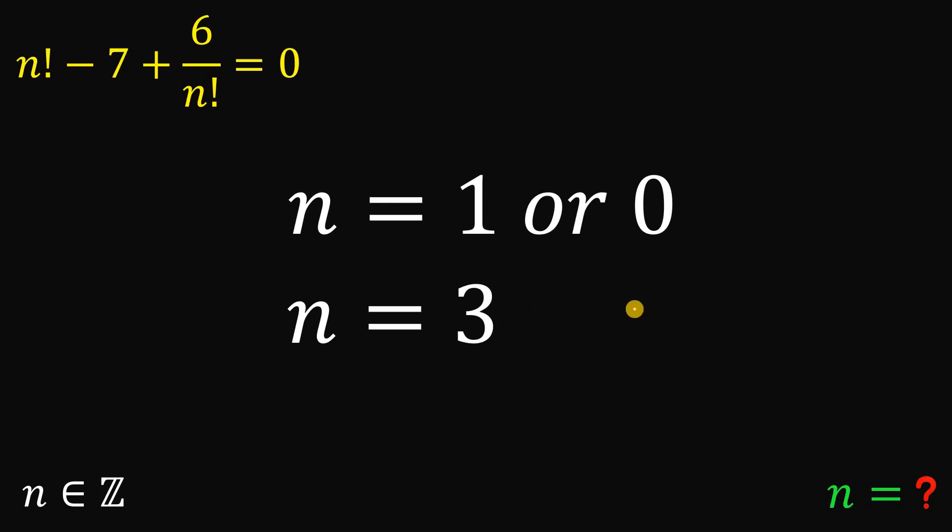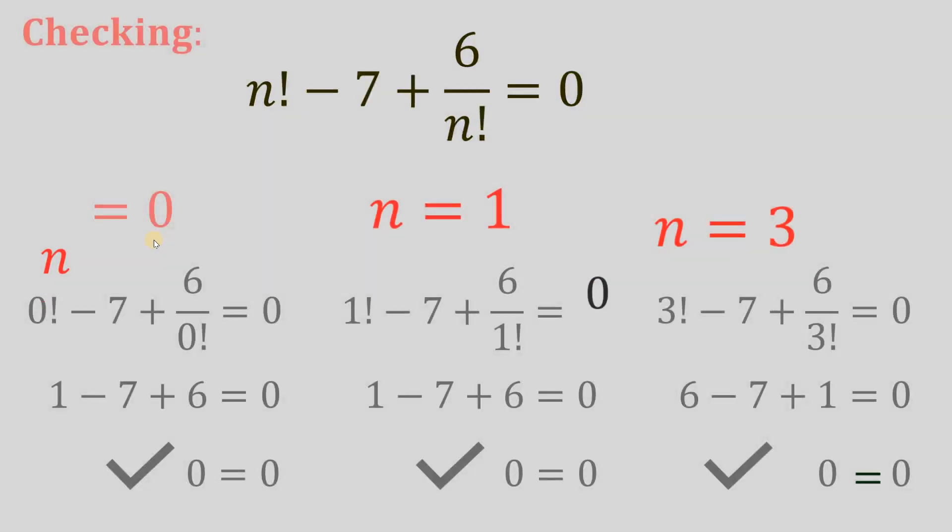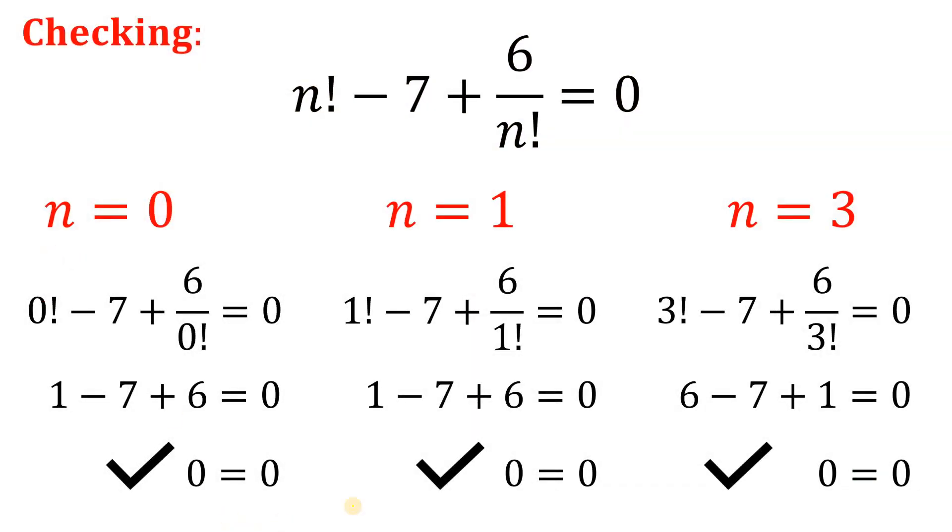But before we end this video, let's double check our answers. So if n equals 0, we have 0 equals 0. So n equals 0 is part of our solution. If n equals 1, we have also 0 equals 0. So n equals 1 is also part of our solution. And if n equals 3, we also have 0 equals 0. So n equals 3 is also part of our solution.